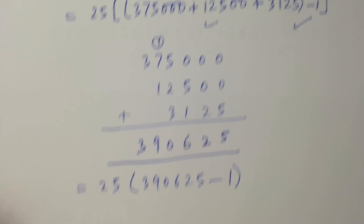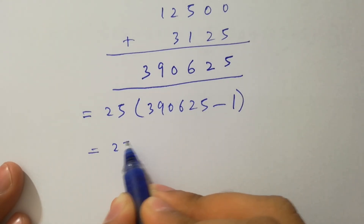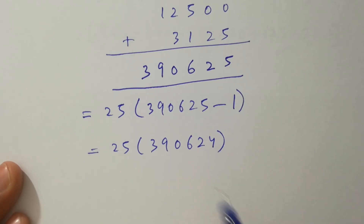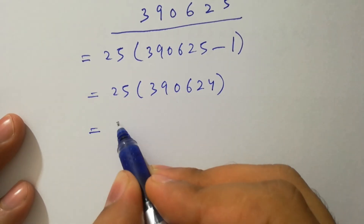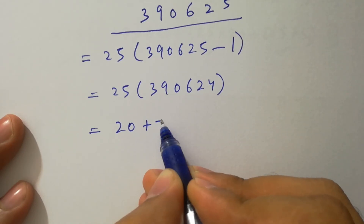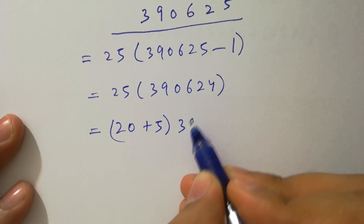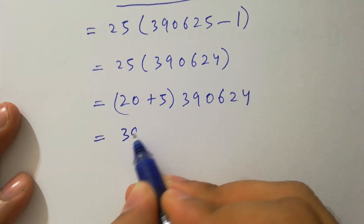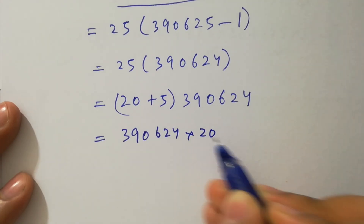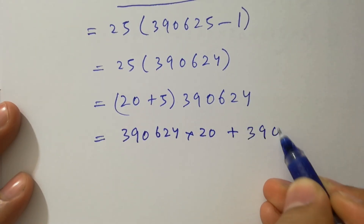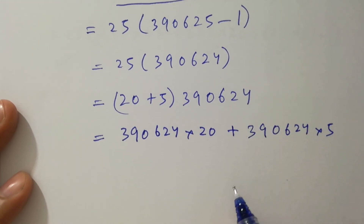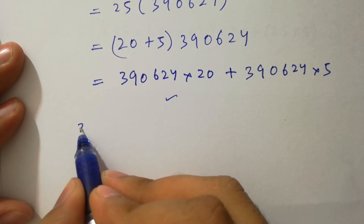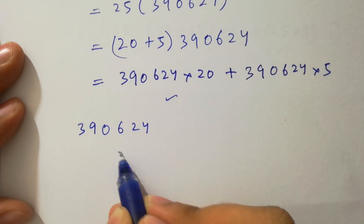We have 25 times 390,625 minus 1. Since 390,625 minus 1 is 390,624, and 25 equals 20 plus 5, we compute 390,624 times 20 plus 390,624 times 5. For 390,624 times 20: the multiplication gives 7,812,480.